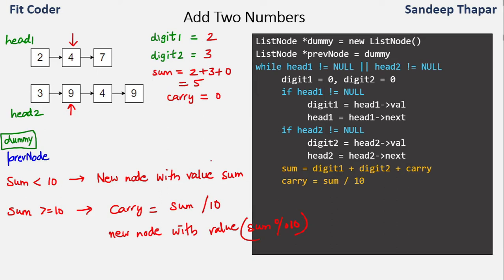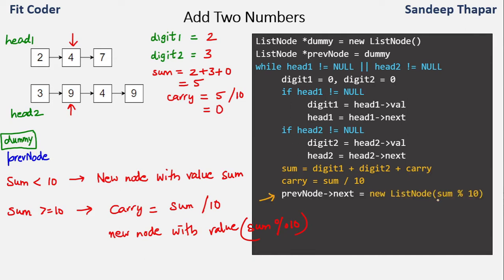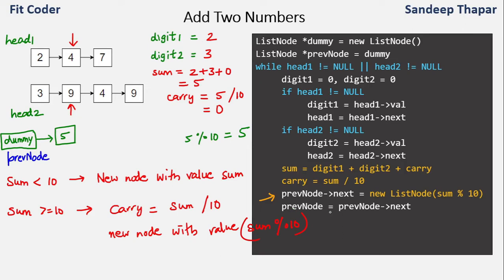We compute carry as sum divided by 10 — if sum is less than 10, carry will be 0. In this case 5/10 is 0. Then we create a new list node with value sum mod 10. Sum is 5, so 5 mod 10 = 5; we create a new node with value 5 and make it the next of previous node. Previous was pointing to dummy, so the link from dummy to 5 is made. Then we move previous to this new node (5). We proceed to the next iteration.